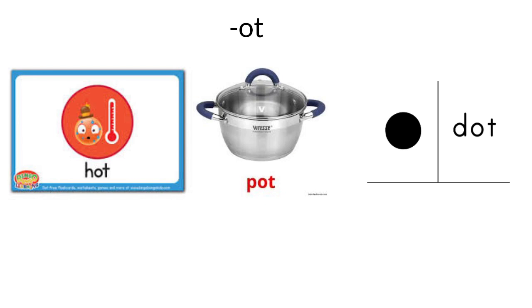Okay everybody, now let's take a look at the ot word family. Look at the first one: h-o-t, hot, hot, hot. How about this? p-o-t, pot, pot, pot. And the last one: d-o-t, dot, dot, dot. So listen carefully: hot, pot, dot. Did you hear the ot sound at the end of each word?